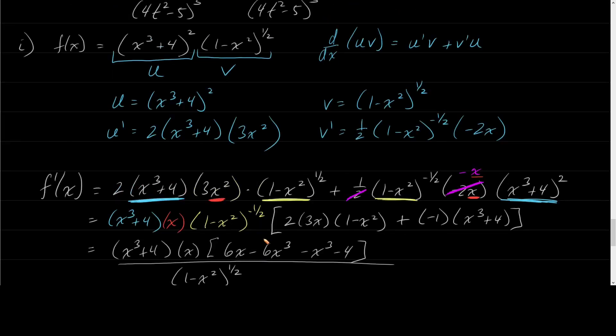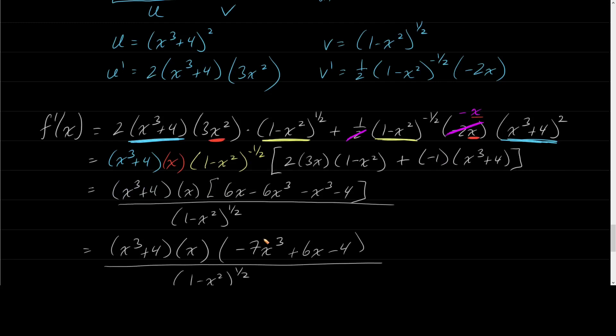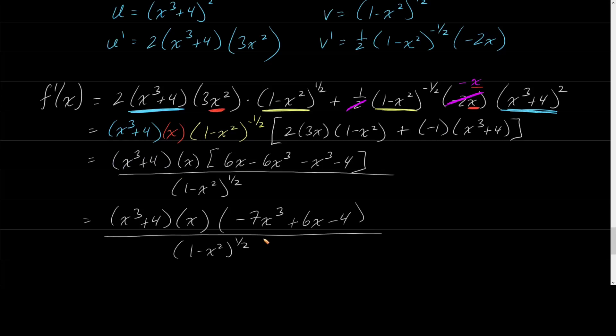Notice it looked much simpler originally — just the product of two functions. What I want you to notice is that we used not only the product rule, but also the chain rule within the same problem. That is a very common thing to happen. The chain rule can apply many times — in fact, the chain rule always applies in general. The chain rule is definitely the most important rule; it's something that always needs to be applied.